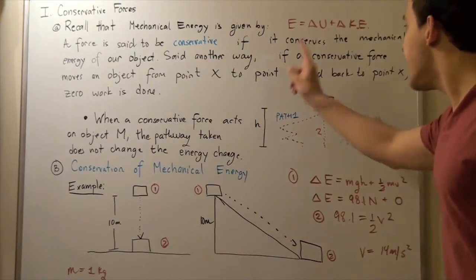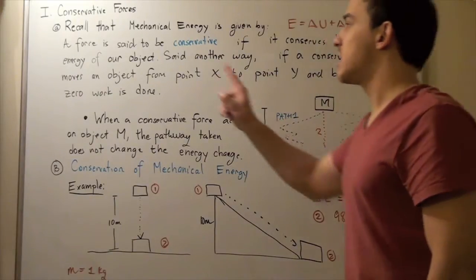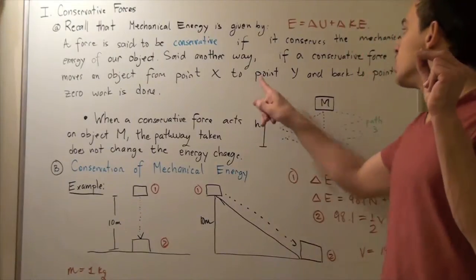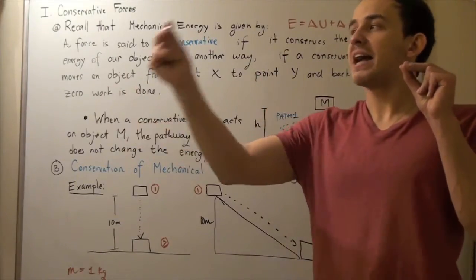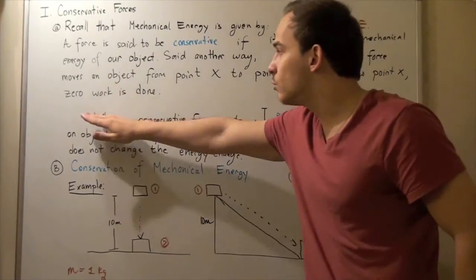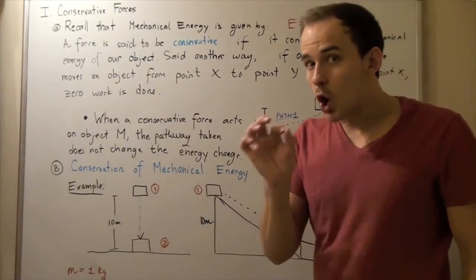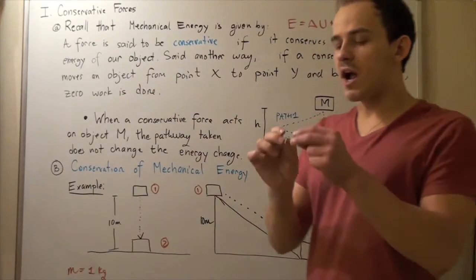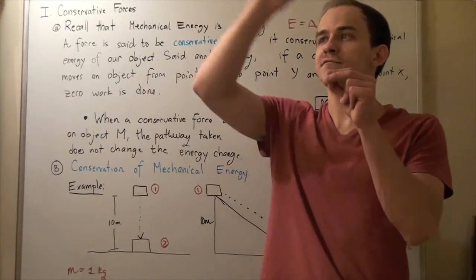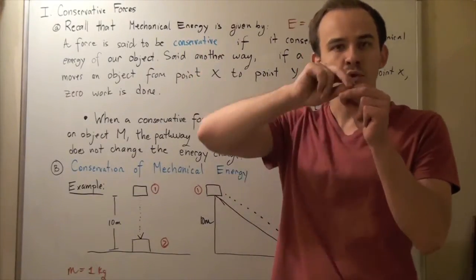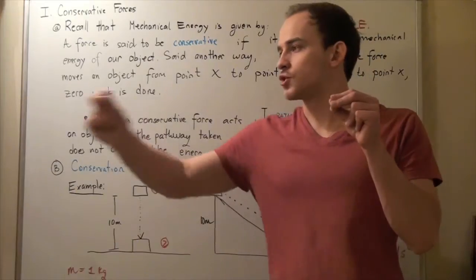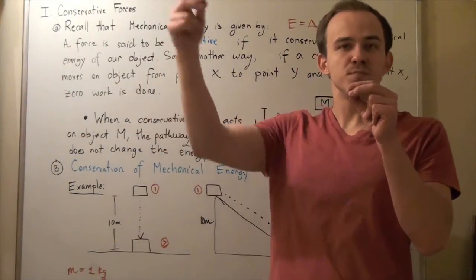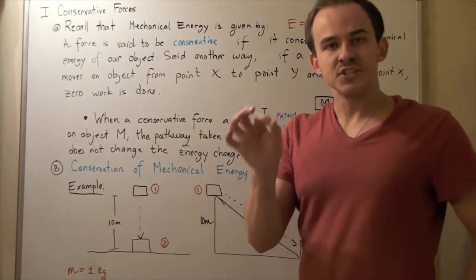Said another way, if a conservative force moves an object from point X to point Y and back to point X, zero work is done. That's true whether our object moves along a circular path, a straight path, or some curvy path — as long as it returns to its initial point. In each case, zero work is done.